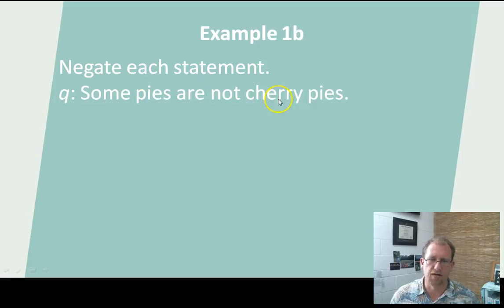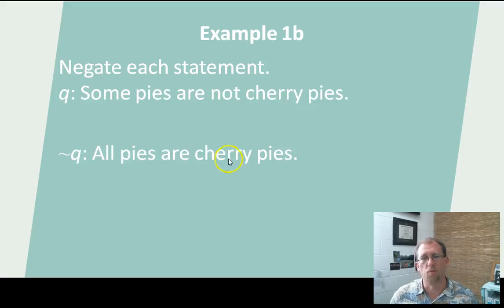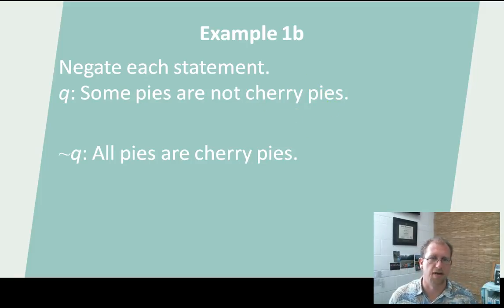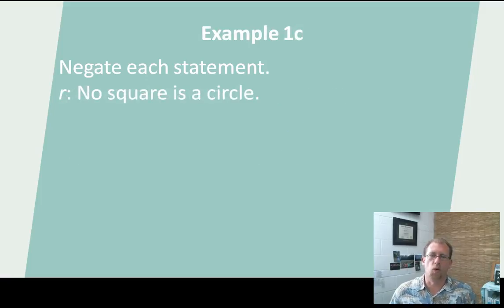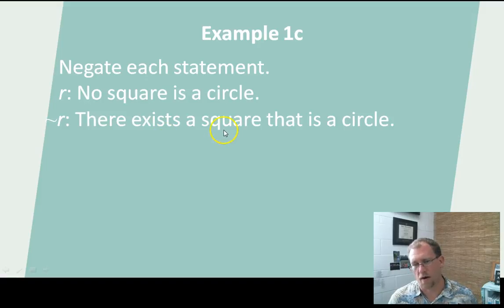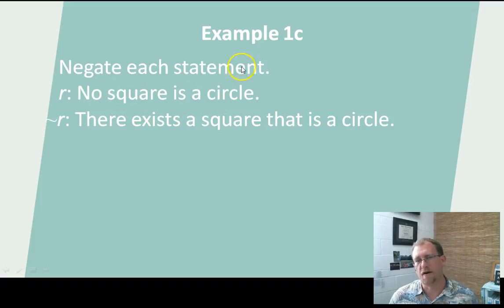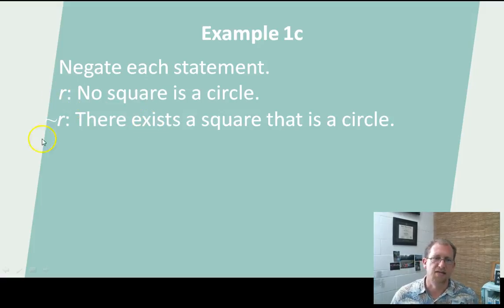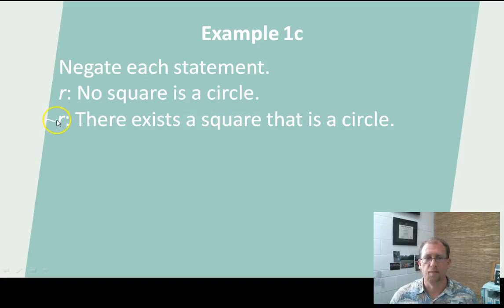Negate the statement: some pies are not cherry pies. The opposite of that would be that all pies are cherry pies — there does not exist a pie that is not a cherry pie. Next: no square is a circle. The negation is: there exists somewhere a square that is a circle. That's a nonsensical statement, but that's the point — negating something changes its truth value. R is 'no square is a circle,' which is true. The opposite of R should be false: there exists a square that is a circle. A negated statement always has the opposite truth value from the original.